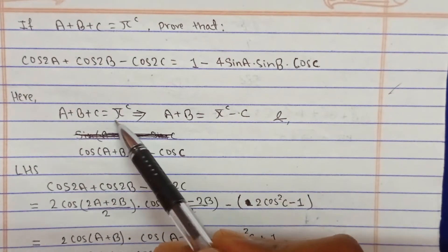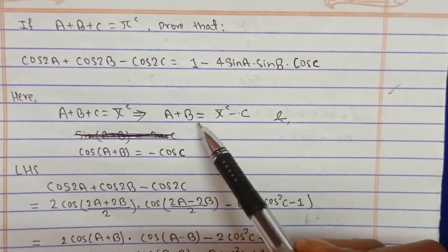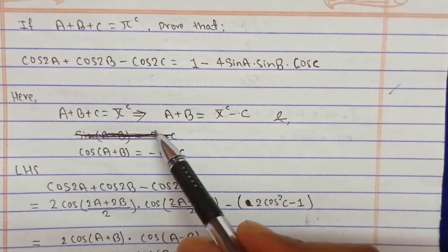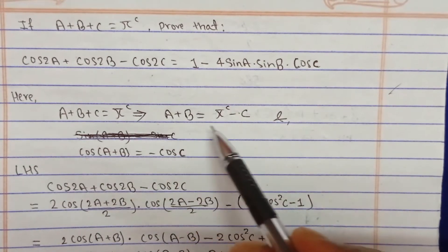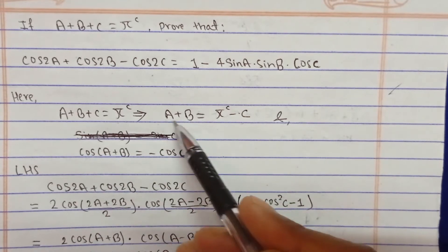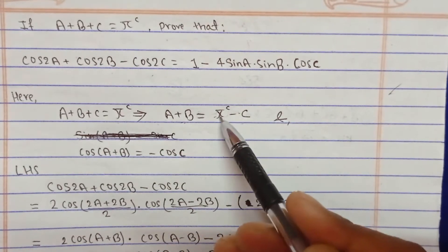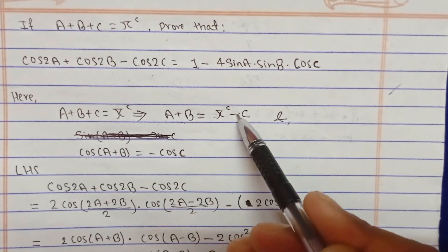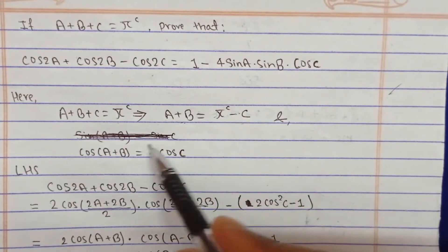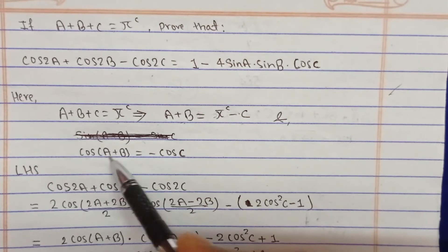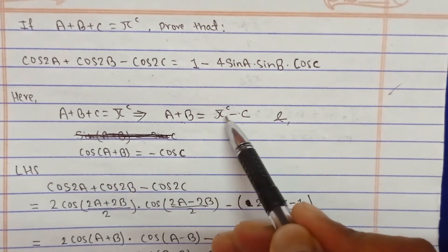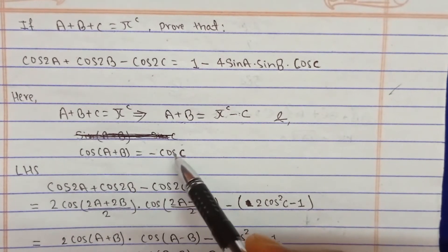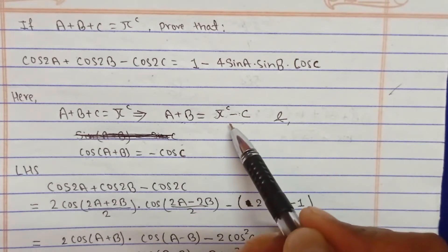Before starting from the LHS, note that A plus B plus C equals pi, which can be written as A plus B equals pi minus C. Taking cosine on both sides: cos(A+B) equals cos(pi minus C). Since cos(180 minus theta) equals minus cos theta, we get cos(A+B) equals minus cosC.